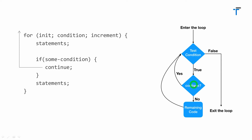And if continue doesn't execute, then simply the remaining part of the loop will be executed normally and it will go back to the top and continue for the next loop iteration.